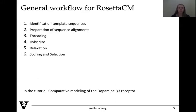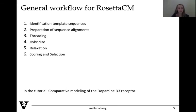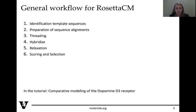The general workflow for Rosetta CM is: identifying the template sequences you want to use, preparing the sequence alignments, threading your target sequence onto your template using those alignments, running hybridize, relaxing those structures, and scoring and selecting your final models. In this tutorial, we will use the dopamine D3 receptor.